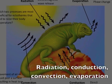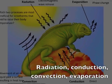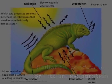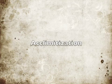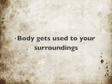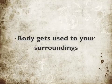Heat transfer occurs through radiation, conduction, convection, and evaporation. There's also acclimatization — the body gets used to its surroundings.